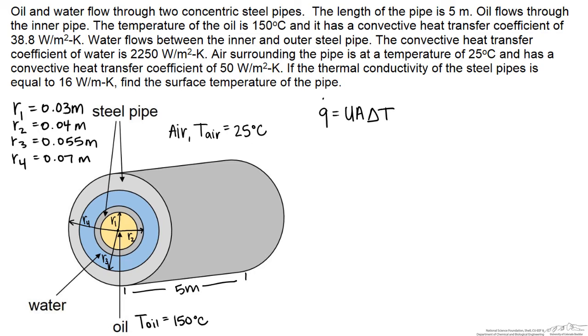The outside air is at a temperature of 25 degrees C. If the thermal conductivity of the steel wall is equal to 16 watts per meter K, find the surface temperature of the pipe.